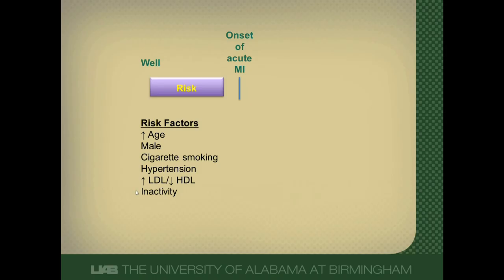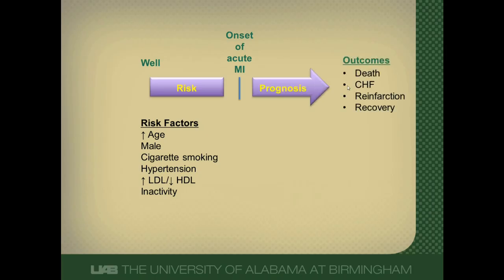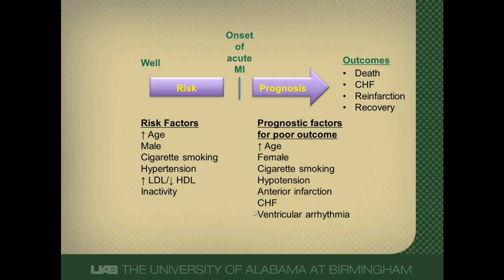Once you develop an acute MI, a variety of outcomes could happen to you. You could die, you could develop heart failure, you could have another heart attack, or you could recover. A variety of factors predict that prognosis — what's going to happen to you after developing an acute MI — and they're listed here. Interestingly, some things are both risk factors and prognostic factors, like increasing age and cigarette smoking, but other things aren't.